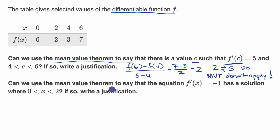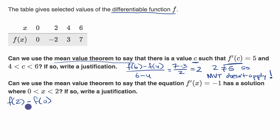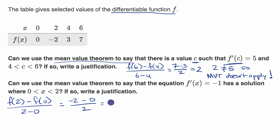Next part: Can we use the mean value theorem to say that the equation f prime of x equals negative one has a solution on the interval from zero to two? Let's compute the slope of the secant line: f(2) minus f(0), all over two minus zero, equals negative two minus zero over two, which equals negative two over two, which equals negative one.